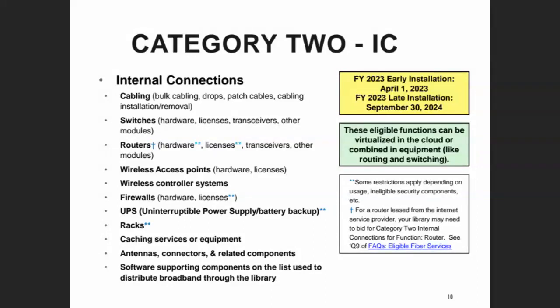Sometimes we have to perform what's called a cost allocation — we say that this firewall license is 50% eligible, so I'm going to ask for a discount on only half of the cost. And sometimes we just have to skip pieces of equipment or licenses that may not be eligible at all. Sometimes you just have to eat those full costs.